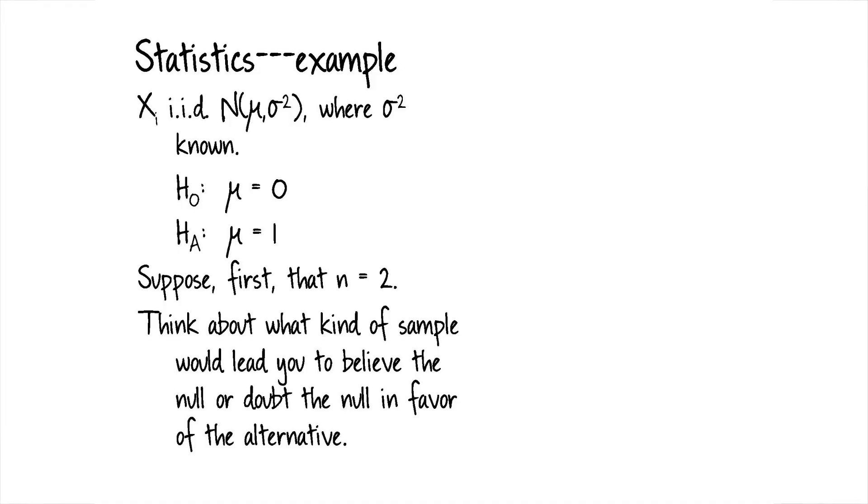The hypothesis, our null hypothesis that we want to test, is that mu is equal to zero. The alternative is that mu is equal to one. This is a little non-standard and maybe a little non-realistic because we're only allowing for the possibility that mu is equal to zero or one. We're not allowing for any other possibilities.